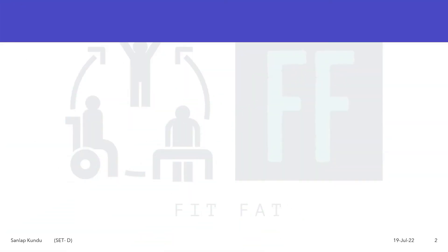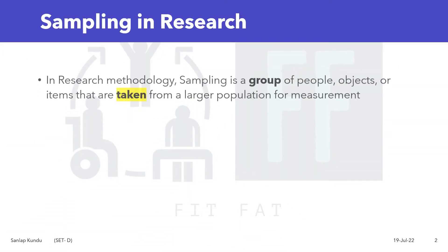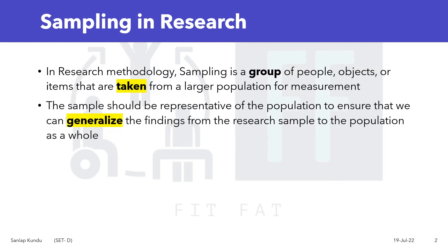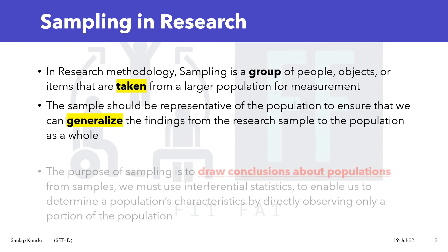Now let's see what is sampling in research. In research methodology, sampling is a group of people, objects, or items that are taken from a larger population for measurement. The sample should be representative of the population to ensure that we can generalize the findings from the research sample to the population as a whole.